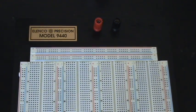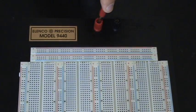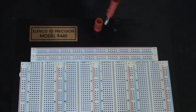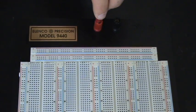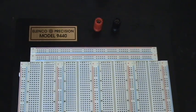Another cool thing about these binding posts is that they actually have little eyelets on top of them, or at least most breadboards do, where you can take a banana clip and plug it right into the top of your binding post. And this helps with testing and other things like that.